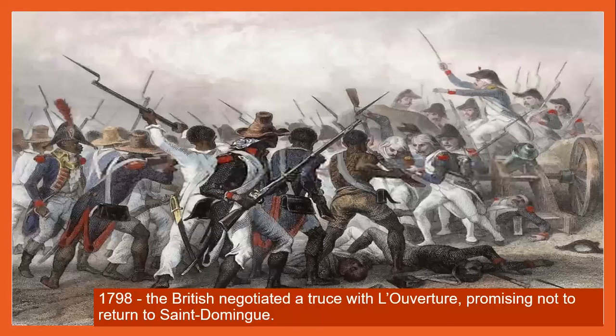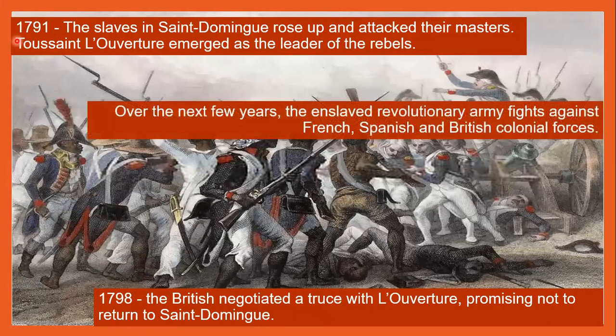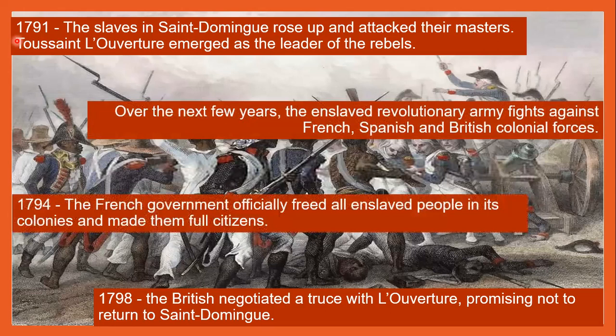Let's have a look at a timeline of events. Before we do that, have a look at the image in the background — what can you see? In 1791, the slaves in Saint Dominique rose up and attacked their masters, and Toussaint Louverture emerged as a leader of the rebels. Over the next few years, the slave revolutionary army fought against French, Spanish and British colonial forces. In 1794, the French government officially freed all enslaved people in its colonies and made them full citizens. In 1798, the British negotiated a truce with Louverture, promising not to return to Saint Dominique.